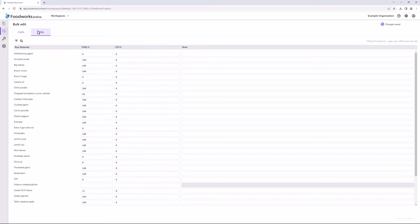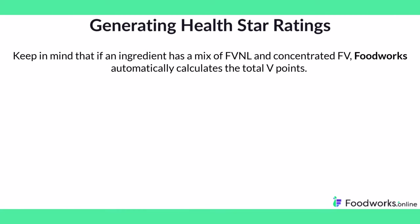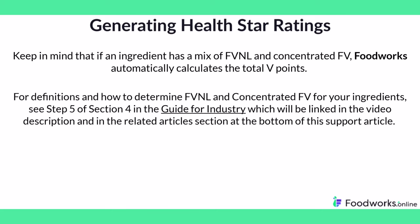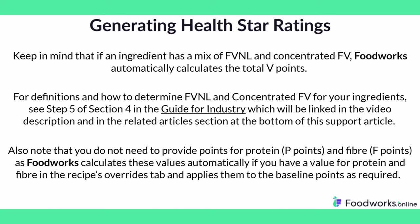A handy tip is that you can use keyboard shortcuts to make it quicker to enter the percentage FVNL and CFV. You can type A on your keyboard for 100% and Z on your keyboard for 0%. Keep in mind that if an ingredient has a mix of FVNL and concentrated FV, Foodworks automatically calculates the total V points. For definitions and how to determine FVNL and concentrated FV for your ingredients, see step 5 of section 4 in the guide for industry, which will be linked in the video description and in the related article section at the bottom of this support article. Also note that you do not need to manually provide points for P points and F points as Foodworks calculates these values automatically when there are values for protein and fibre in the recipe's overrides tab and applies them to the baseline points as required.